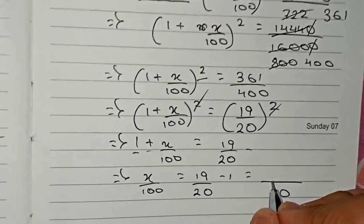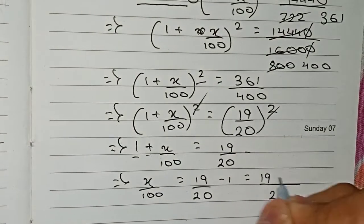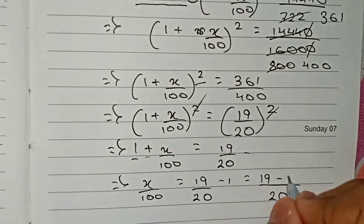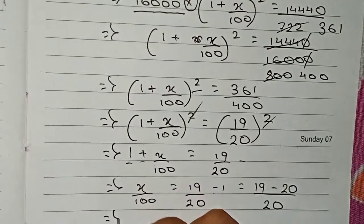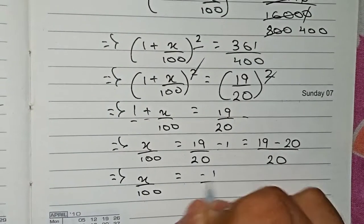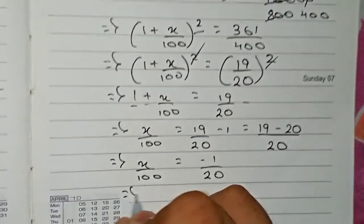Taking 20 as the LCM, 19 minus 20 equals minus 1. So x/100 is equal to minus 1/20. So x will now be equal to minus 1/20.